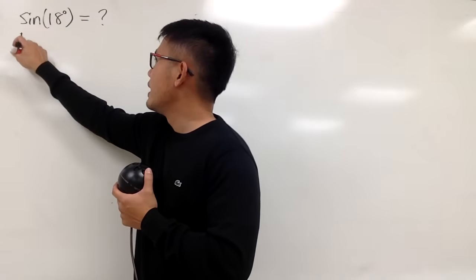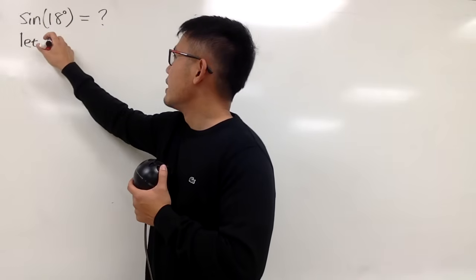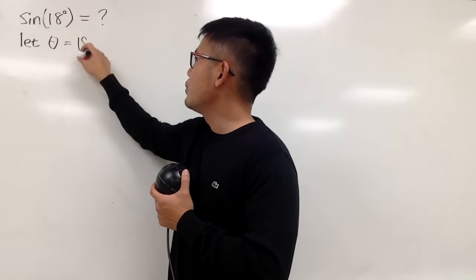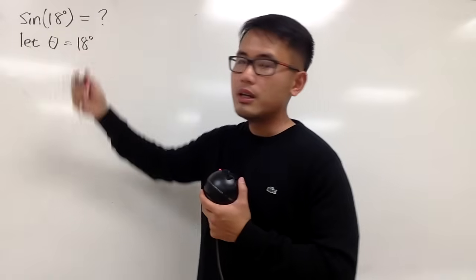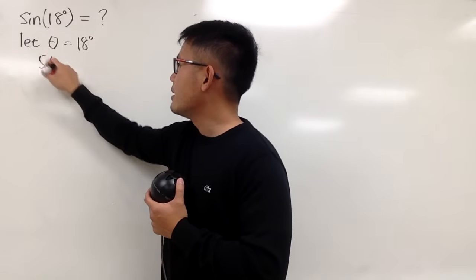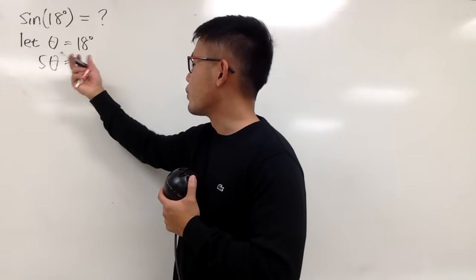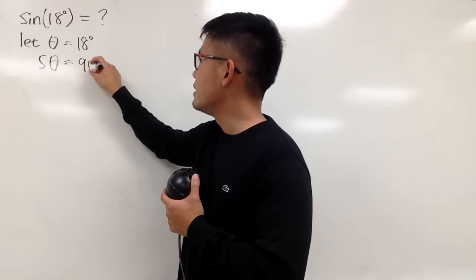So let's just say that theta, that's the angle, and I want to say that's equal to my 18 degrees here, and let's multiply 5 throughout this, so 5 theta is equal to 90 degrees.